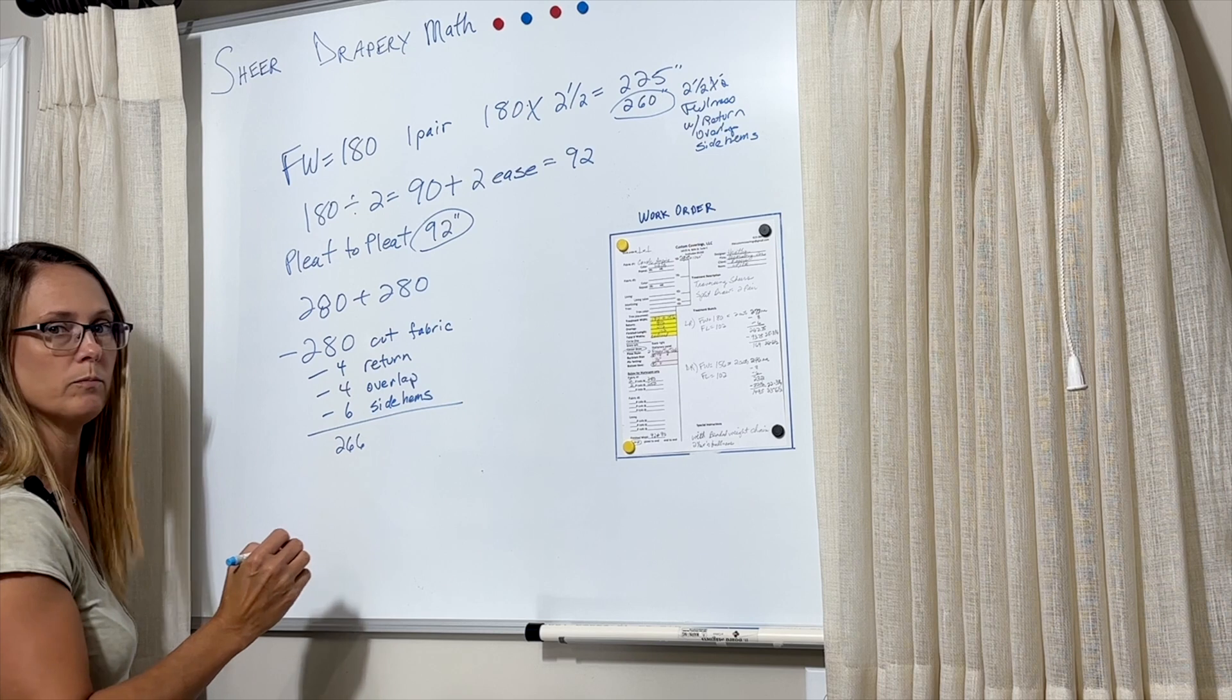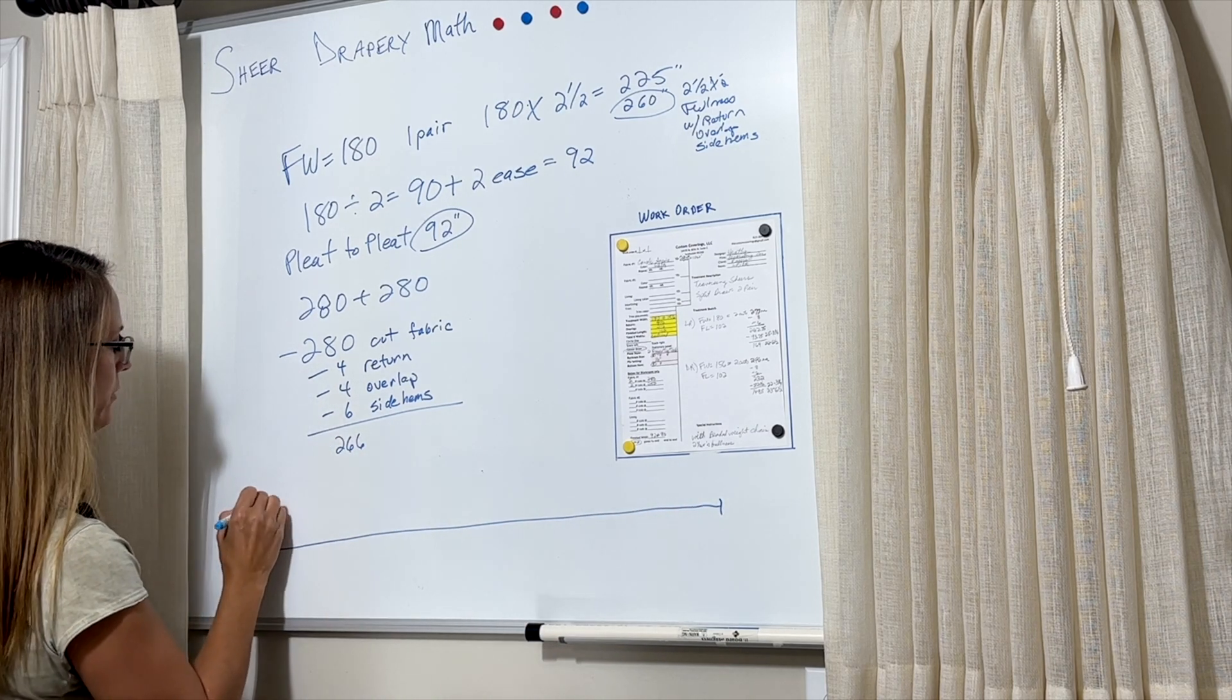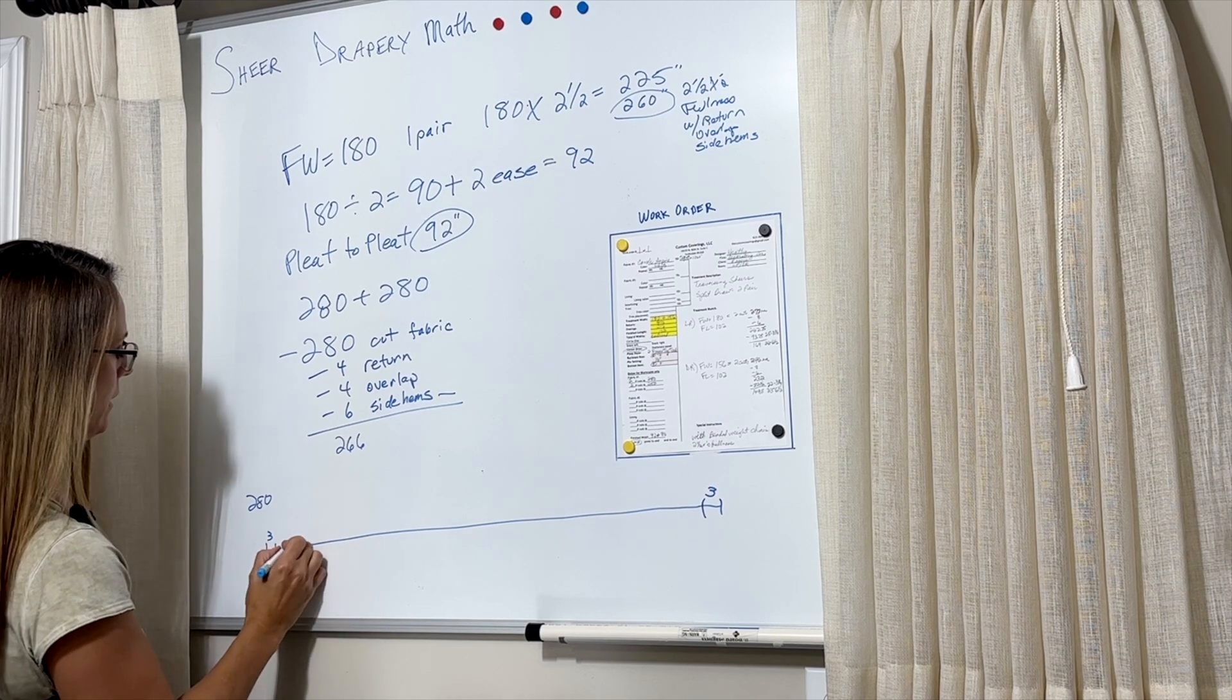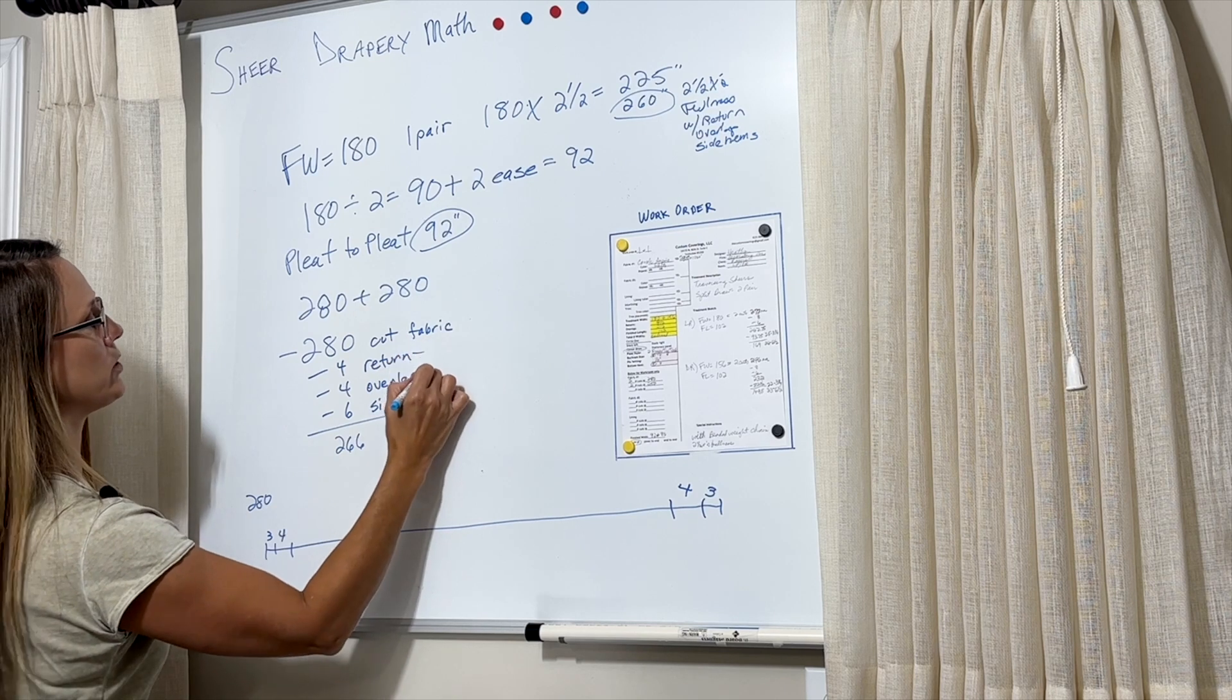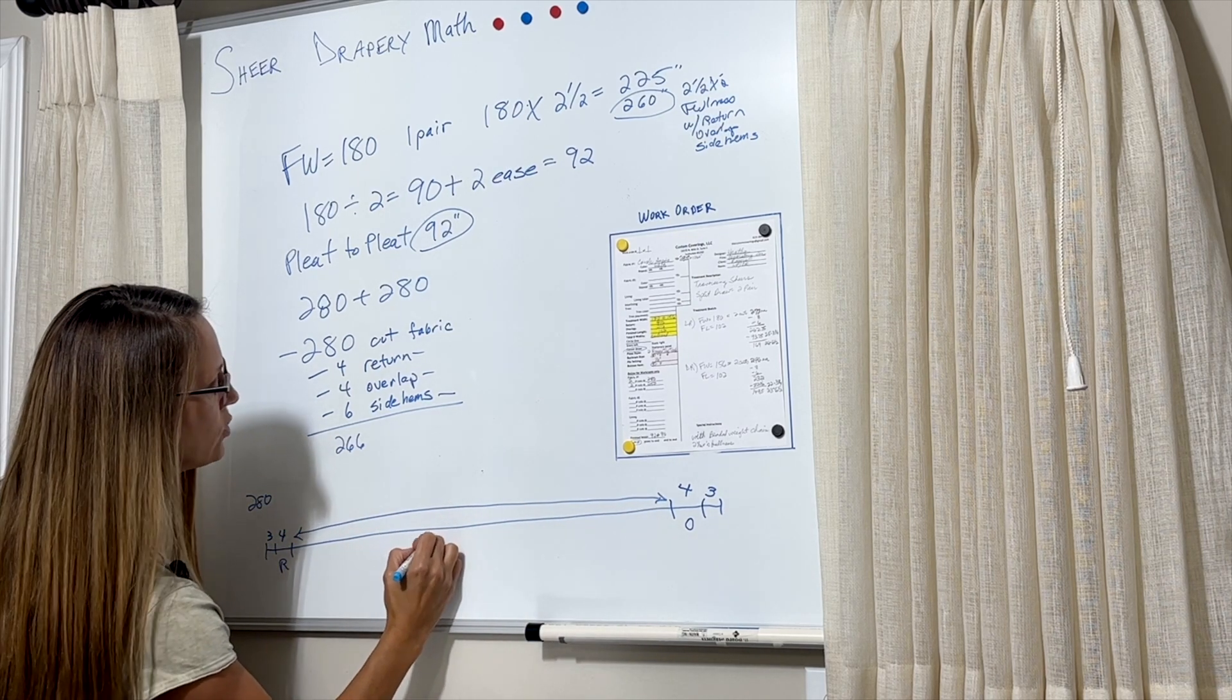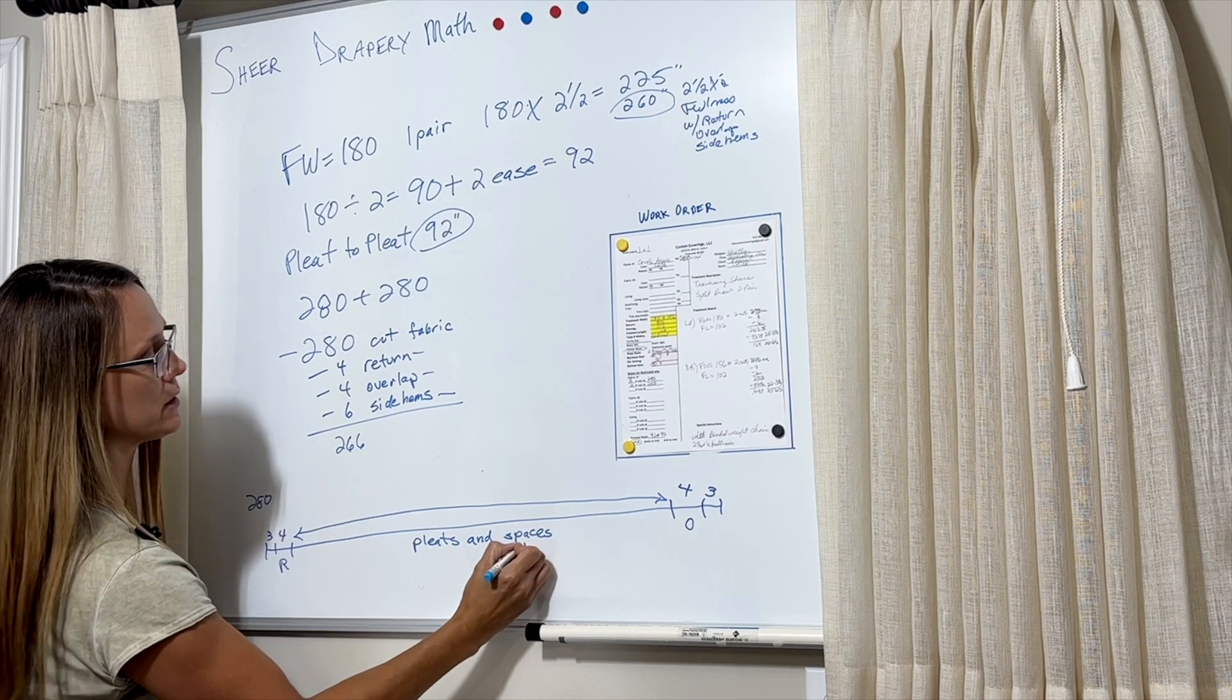And just as a visual of all this, this is basically my cut piece of fabric, that's 280 inches. So what I did is I took off 3 inches on each side for the side hems, that's where the 6 comes in. And I took about 4 inches on each side - one's for the return and one's for the overlap. And then what's left in this middle part here is how much fabric we have to make all the pleats and spaces. And we have to make sure that this space is equal to 92.